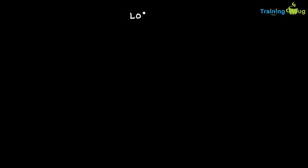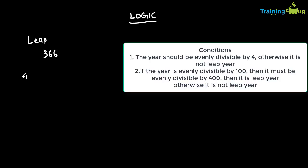First let us understand the logic — how do you determine whether a given year is a leap year or not. A leap year has 366 days. According to the Gregorian calendar, a leap year must follow two conditions. First and foremost, it should be evenly divisible by four. If it is evenly divisible by four, we can say it is a leap year; otherwise we can straight away say it is not.